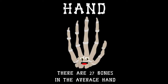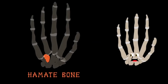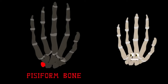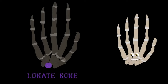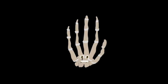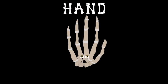The hamate bone is injured by golfers when their club hits the ground — that's how the fracture occurs. Next to that is the triquetral bone, on the outside of the wrist. The pisiform bone is the next on the list, then the lunate bone at the end of your wrist. That concludes the hand bones — without these bones your hand would never bend or twist.